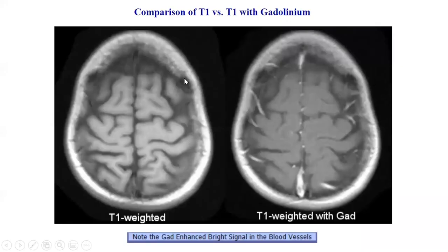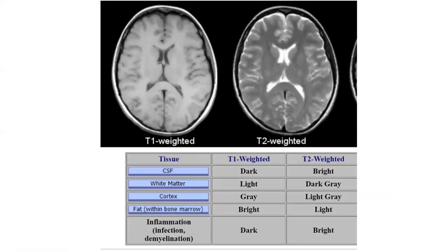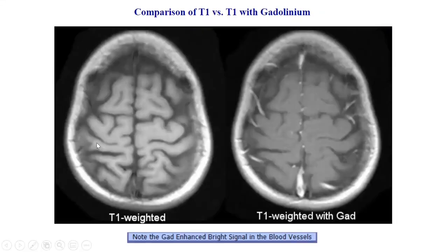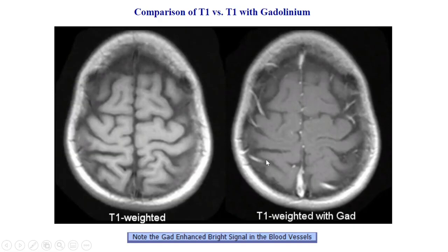Let's look at the comparison of T1 versus T1 with gadolinium. In T1, the CSF is appearing dark. When contrast such as gadolinium is given, you can clearly see the contrast appearing in these spaces. This helps us distinguish between the contrast image and a non-contrast image. Clearly we can see there is an increased gadolinium-enhanced signal in the blood vessels in a contrast image.